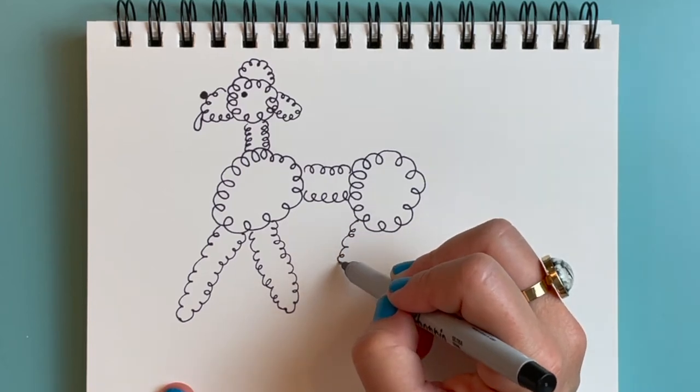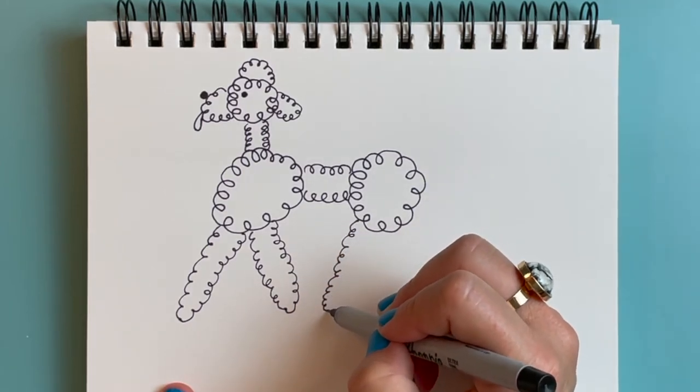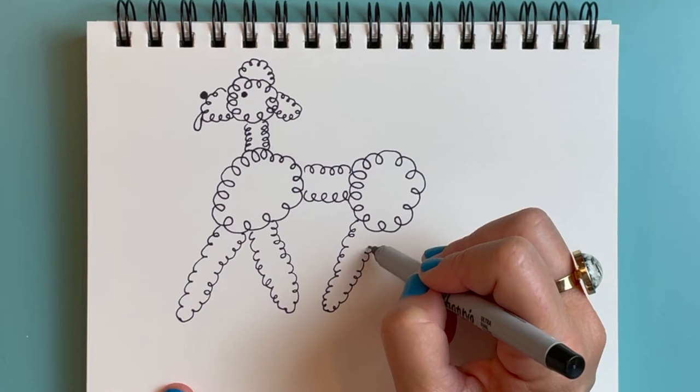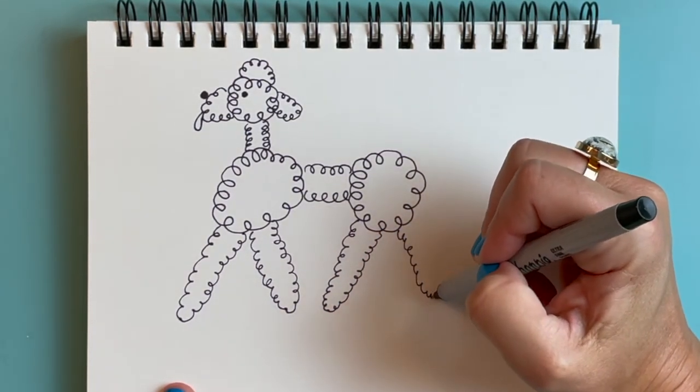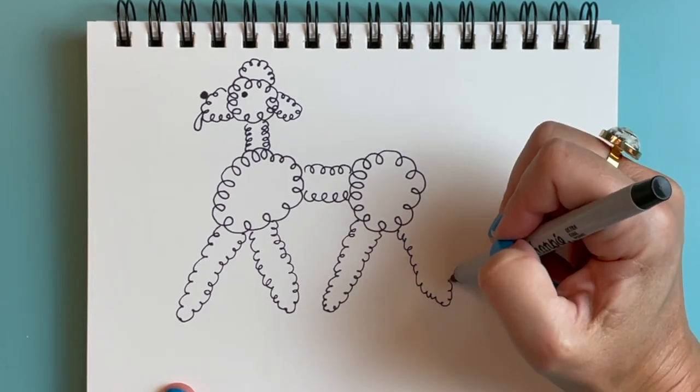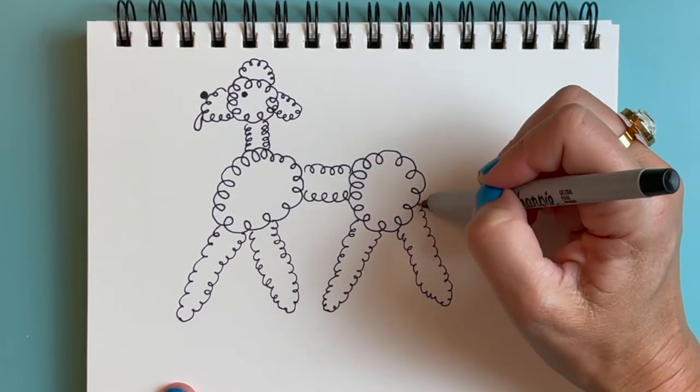And a hind leg here coming down and back up. And one coming out this way like it's trotting. It's going on a little walk. There we go.